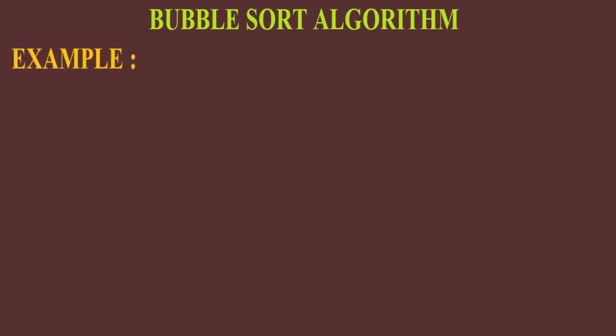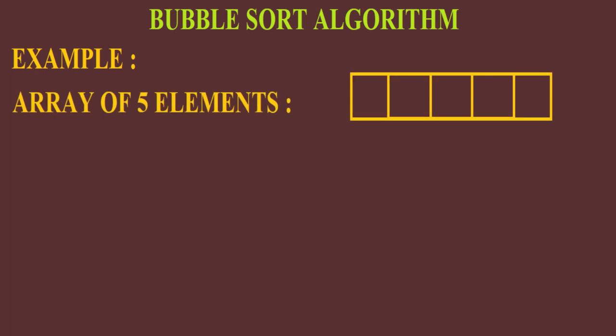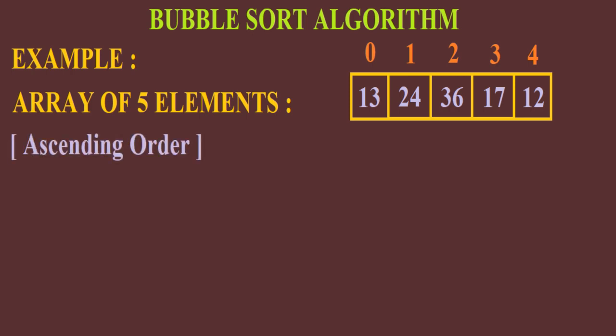Let us look at an example. Consider an array of five elements. The elements are 13, 24, 36, 17 and 12. Their index numbers will be 0, 1, 2, 3 and 4. We will be arranging this array in ascending order.